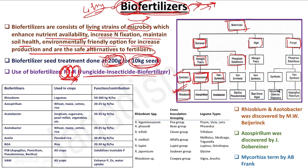Associative nitrogen fixers are associated with certain communities of plants — Azospirillum is an associative nitrogen fixer mostly associated with different grass species. Non-symbiotic nitrogen fixers include Azotobacter, which are free-living aerobic bacteria that can fix atmospheric nitrogen.